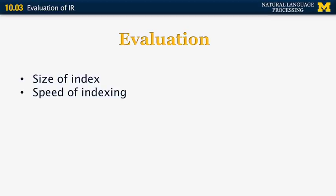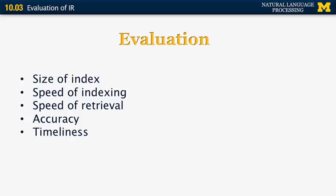Speed of indexing is also very important. We want whenever there's a change in a document to be indexed and added to the index as quickly as possible. Speed of retrieval is also very important — users typically don't want to wait more than a fraction of a second to get their hits. Accuracy is very important: do we provide the correct answers to the user's queries? Timeliness means we index the most up-to-date versions of documents, so that whenever a user wants to find out what happened just now, we don't show them old versions.